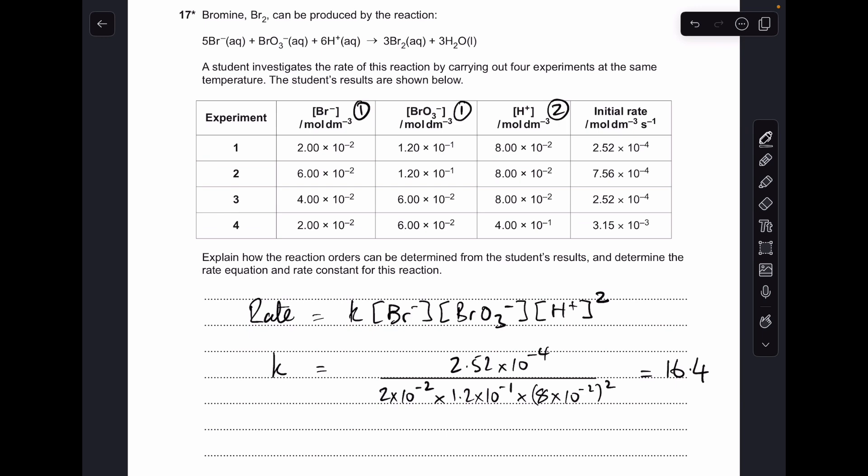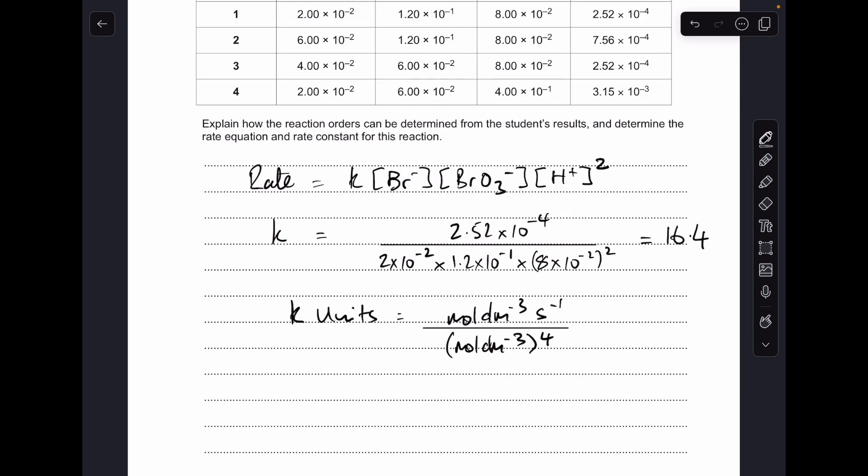And the only thing we need to do now is to work out the units of k. So all we need to do is put the units into the expression for k. So on the top we've got the rate units, moles per decimeter cubed per second, and on the bottom we've got effectively moles per decimeter cubed to the power four. So we'll just cancel that down.